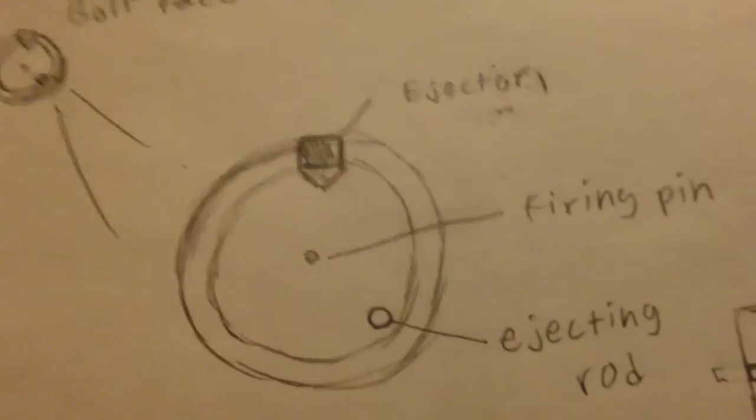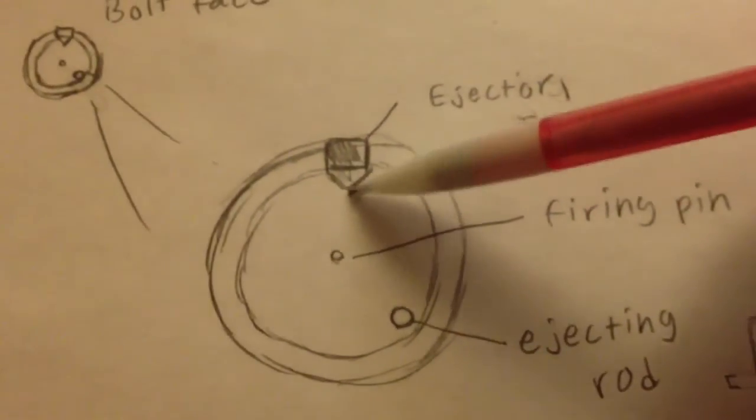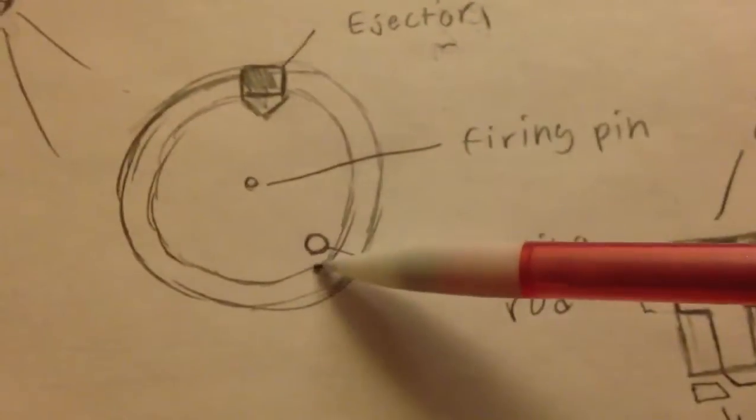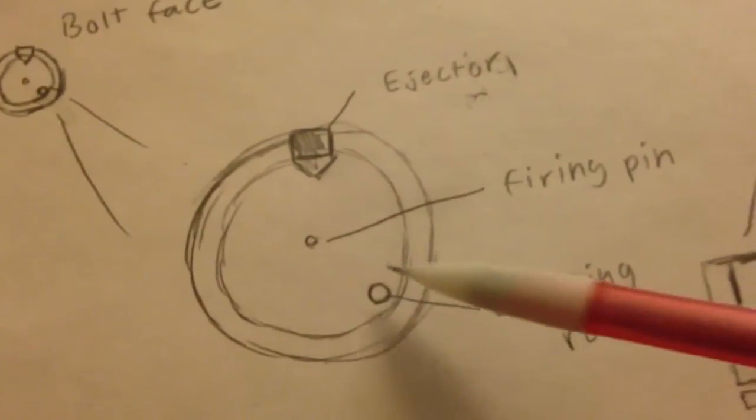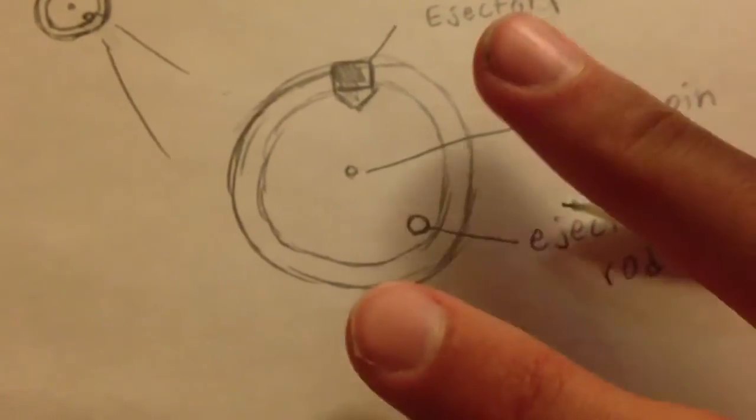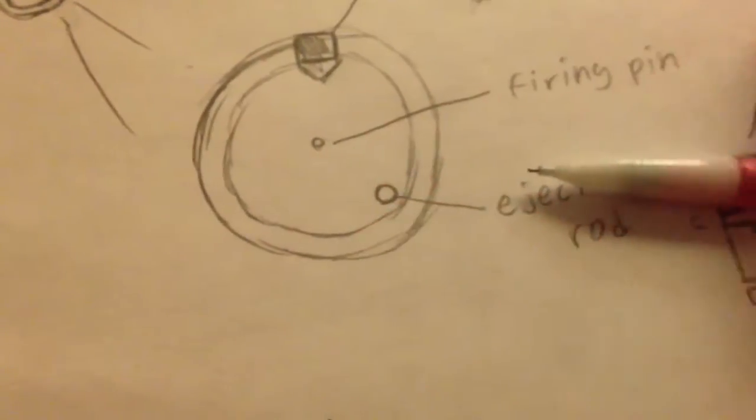And then for the bolt face, right here, there are three components: the ejector claw, the ejecting rod, and the firing pin. Now the reason for the ring here is just to keep the round in place so when it chambers, it doesn't move around at all.